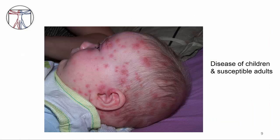Prior to widespread immunization, it's estimated that there were approximately four million cases of varicella a year, resulting in somewhere between 11,000 and 13,500 hospitalizations a year and 100 to 150 deaths. This puts a different spin on a disease that many people think of as a normal childhood illness. The greatest disease burden is in children, particularly in temperate climates.